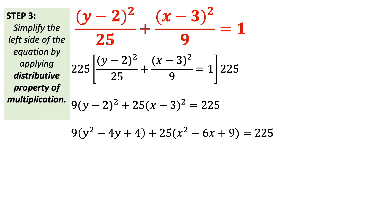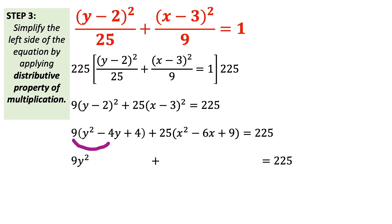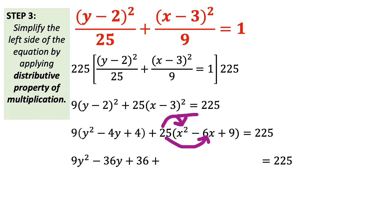In step 3, we further simplify our equation using the distributive property of multiplication. Following the PEMDAS rule: 9 multiplied by y squared equals 9y squared; 9 multiplied by negative 4y is negative 36y; and 9 multiplied by positive 4 is 36. Following the same procedure, we multiply positive 25 by x squared, negative 6x, and positive 9. This gives us 25x squared minus 150x plus 225 equals 225.